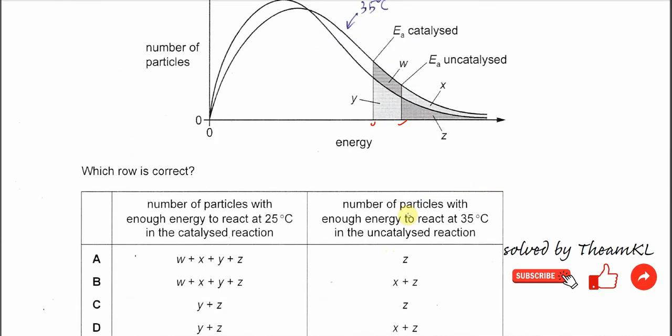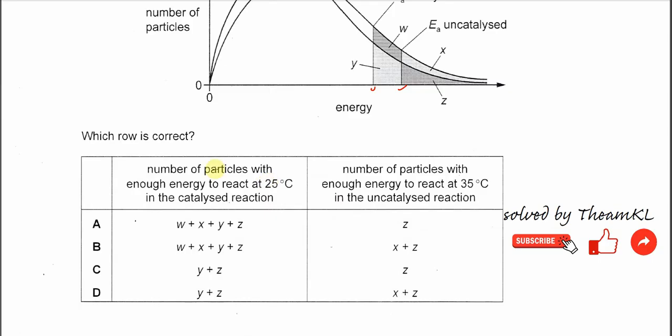Okay, so let's see what it's asking. Which row is correct? The number of particles with enough energy to react at 25 degrees C in the catalyzed reaction.